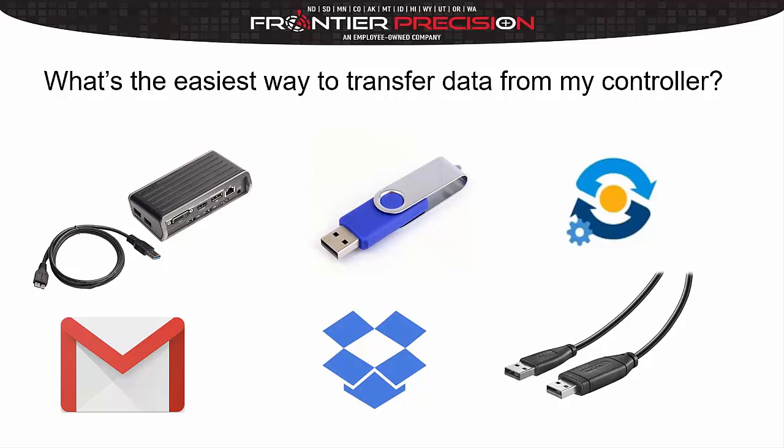For example, if you're a government entity with a local network, you might want to map a drive — say the T drive on your PC is actually the drive to log into your TSC7 controller. That's an easy way to go onto the network, grab your data right off of your TSC7, and drag and drop it to TBC or a different location on your network.